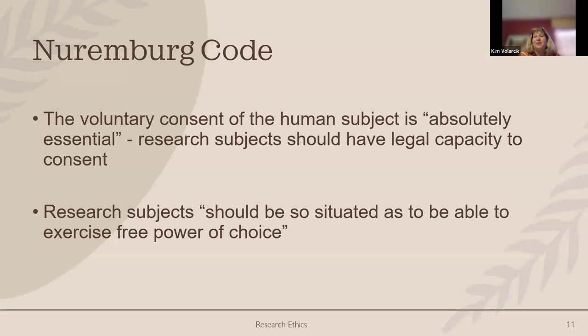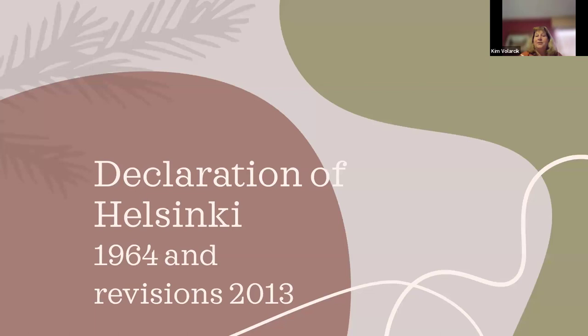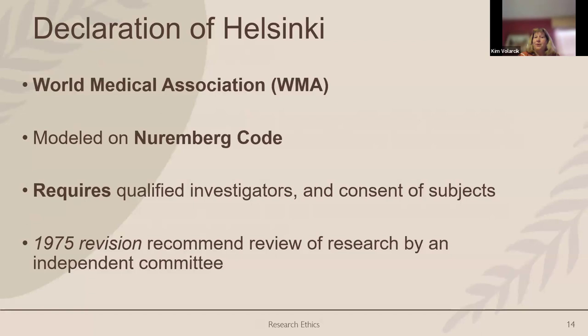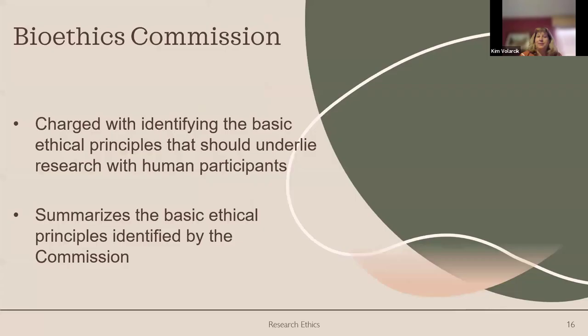The Nuremberg Code stated that to enroll a human subject in a study, it was absolutely essential that they have legal capacity of consent and a free choice to say yes or no. Informed consent must be without coercion, and qualified scientists should oversee the research with no expectation of death or disability. The Declaration of Helsinki in 1964, developed by the World Medical Association, modeled the Nuremberg Code and went further into the consent process itself. It was revised in 1975.